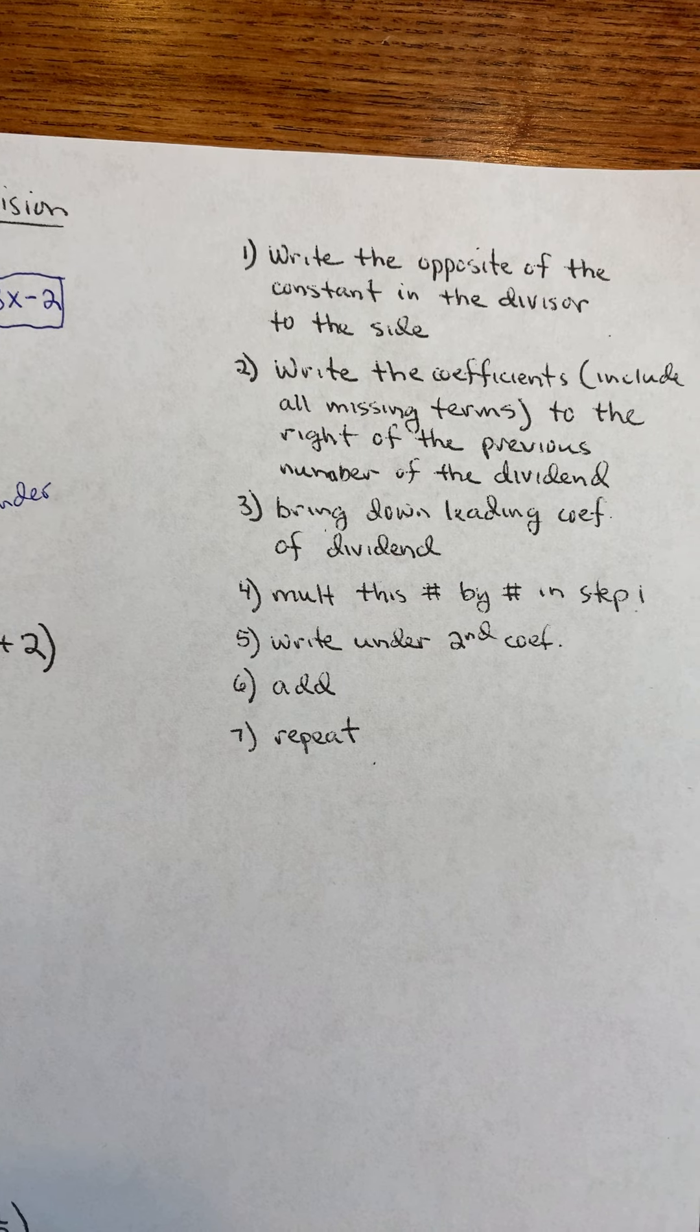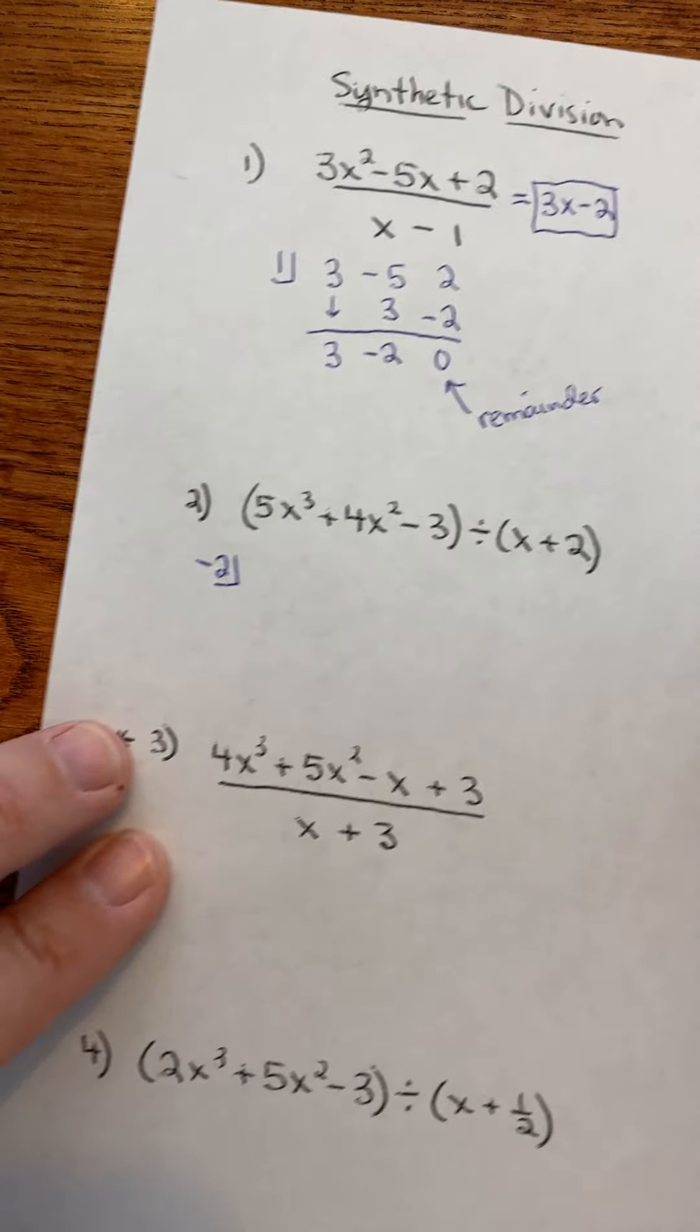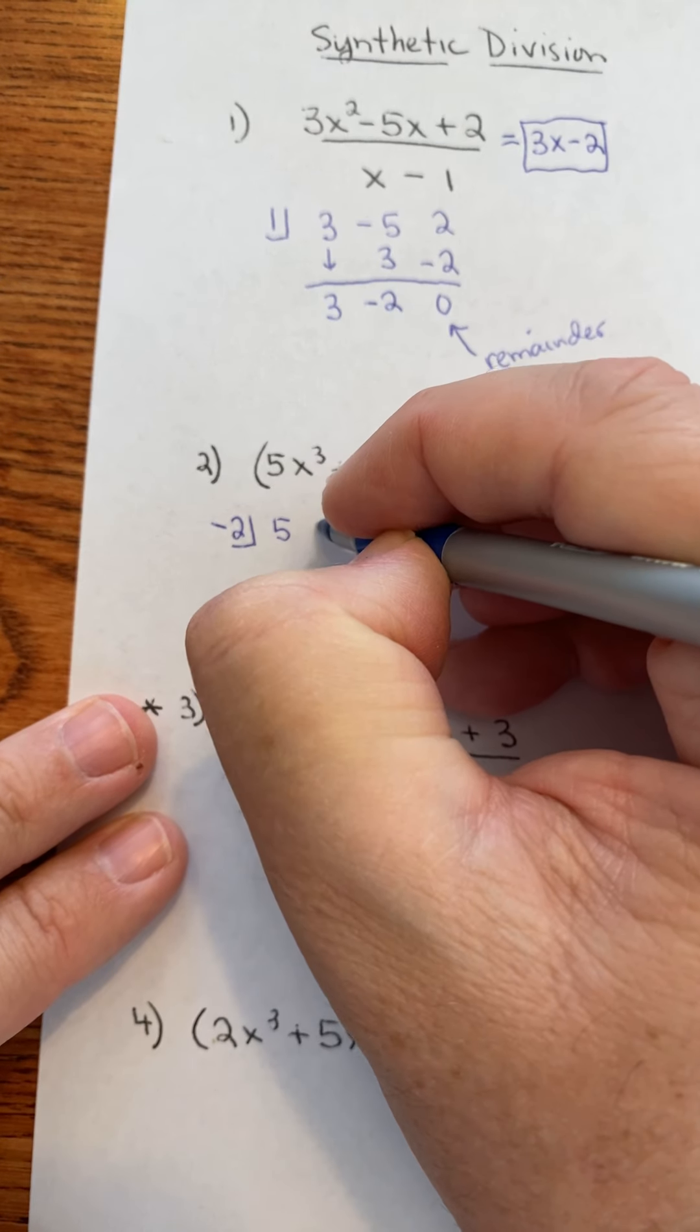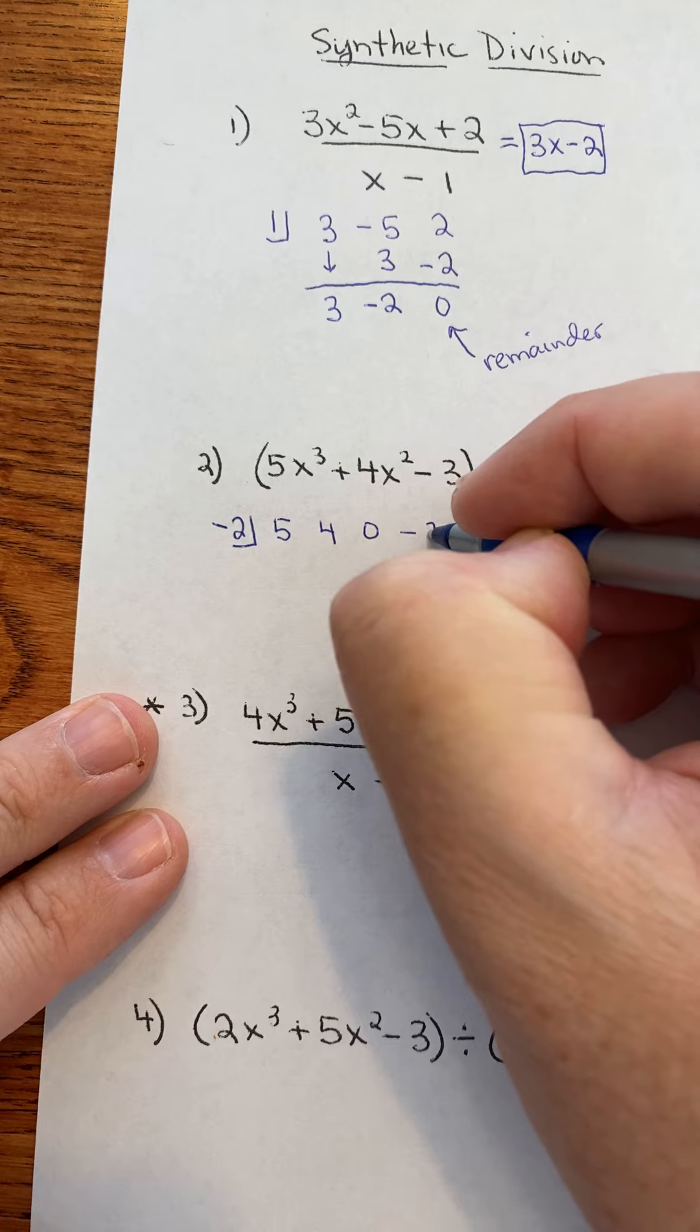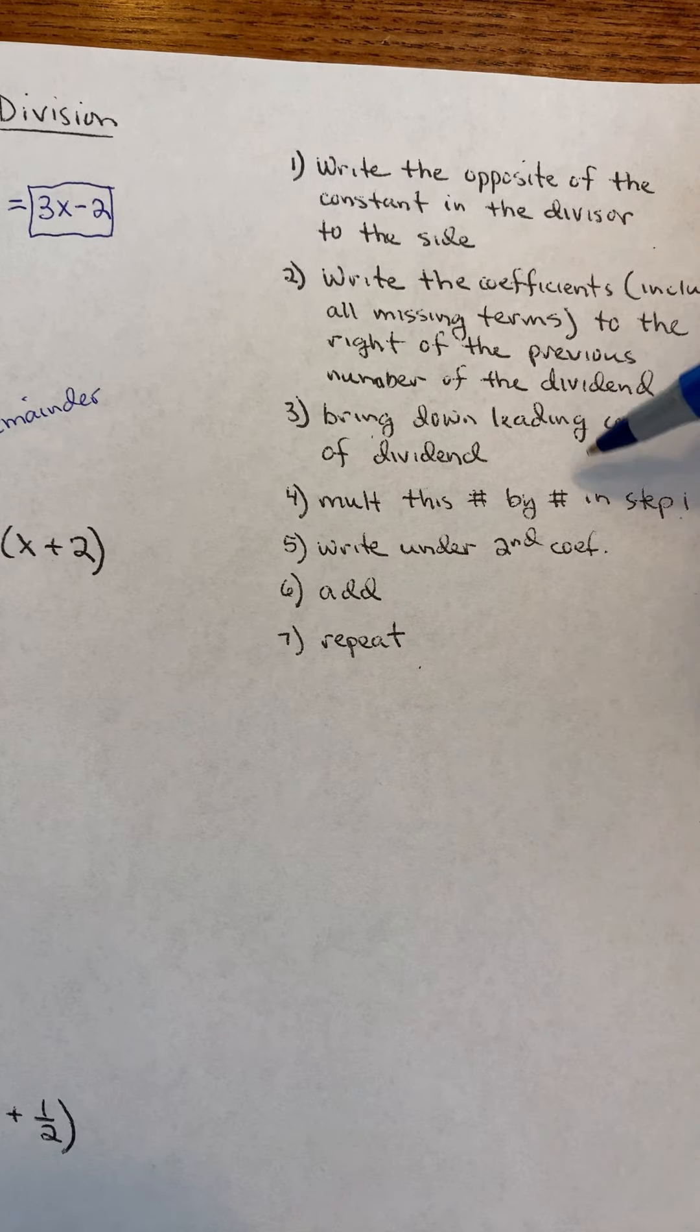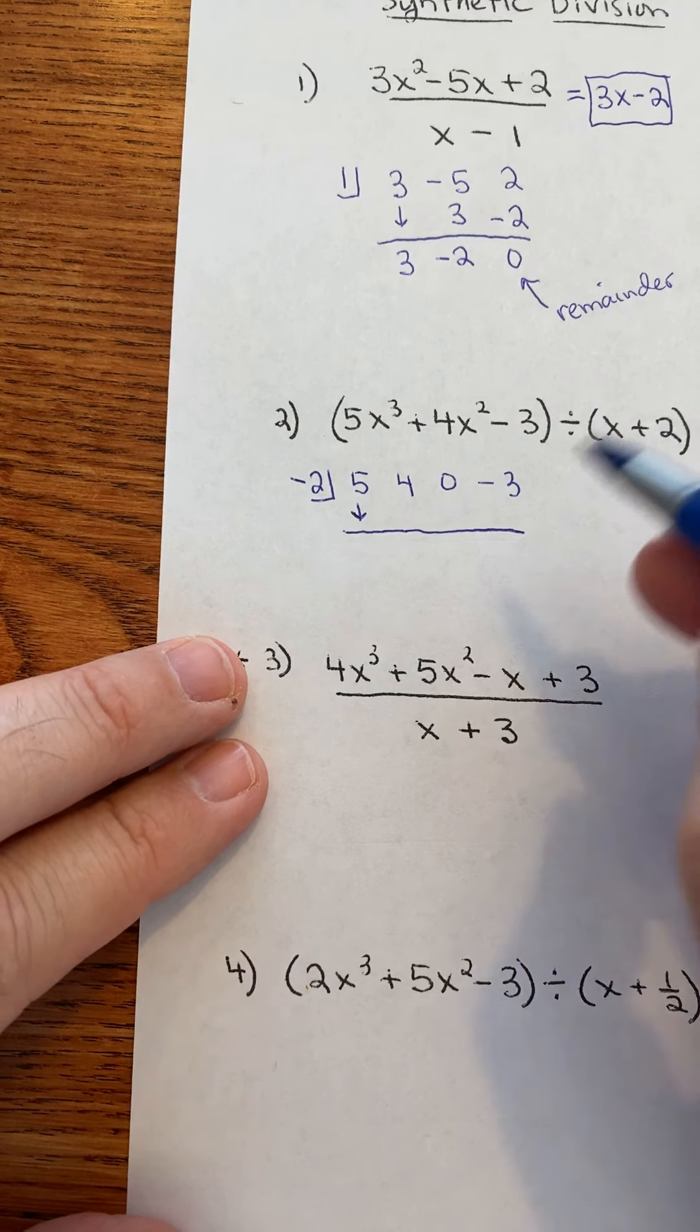Write down the coefficients of the dividend. The dividend is the thing on the top. Now, include your missing terms. Well, if there's a term missing, and there is, the X is missing, I have to put in a coefficient that does not change this problem. That would be a 0. And then, just follow those steps. So, bring down the leading coefficient of the dividend. The dividend is these terms here. So, I'm going to bring down that term of 5.